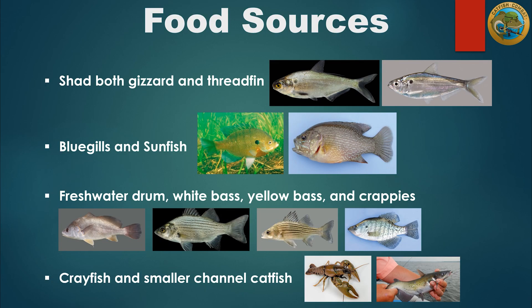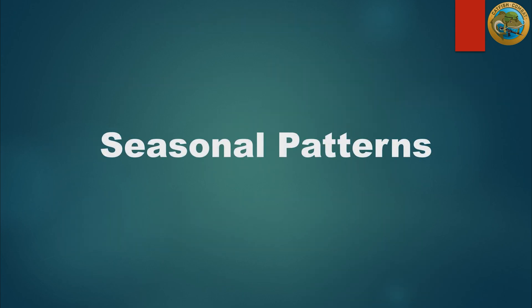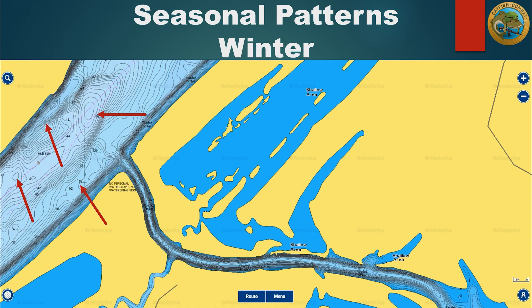Flathead catfish have the same diet as blue catfish, with the addition that they will also eat smaller channel catfish. In the late fall, flathead catfish pretty much follow the same pattern as blue catfish, and you will catch both species in the same zones. In the winter, when the water drops into the mid to low 40s, flathead catfish become very scarce and hard to catch. It's not impossible to catch them, but it becomes much more of a rarity as flatheads occupy very deep water and become very inactive.